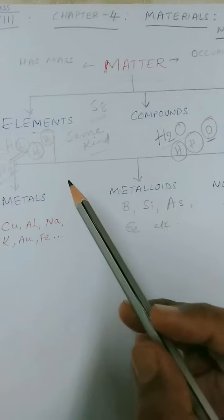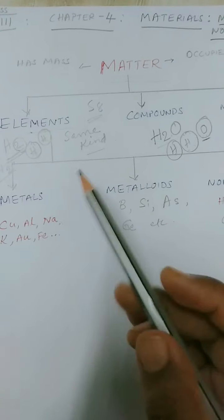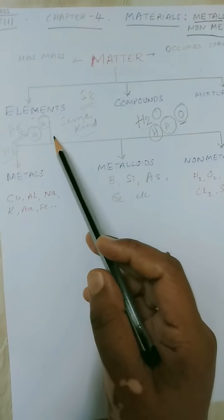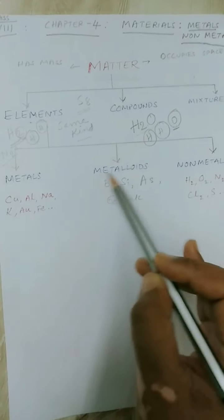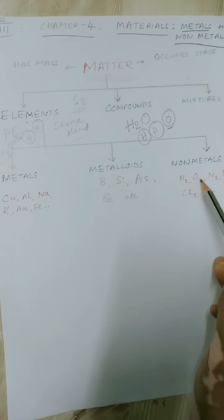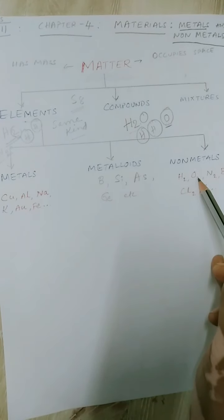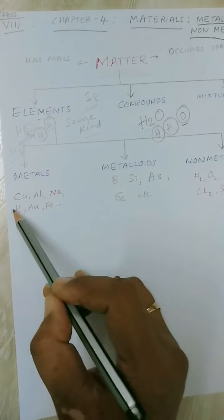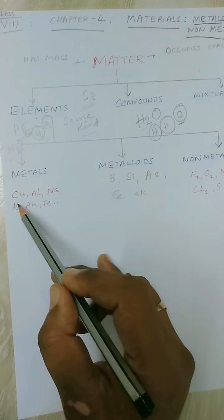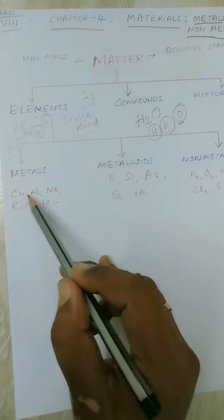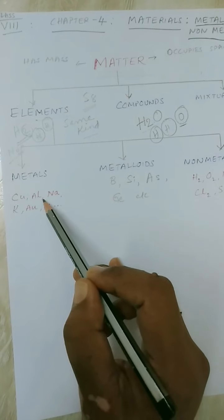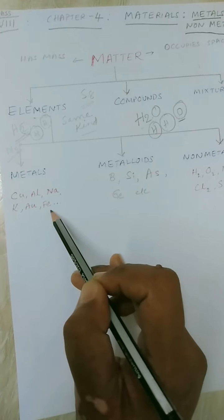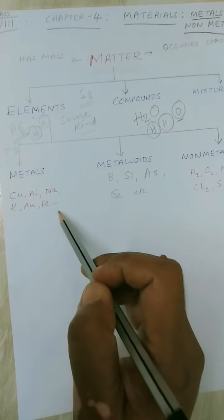There is a scientist by the name Lavoisier. He classified elements as metals, metalloids, and non-metals. Let us talk about metals — examples include copper, sodium, aluminium, potassium, gold, and iron.